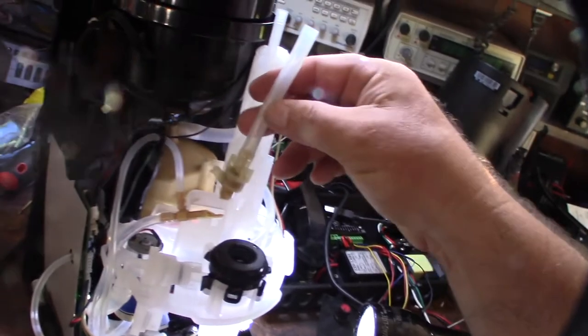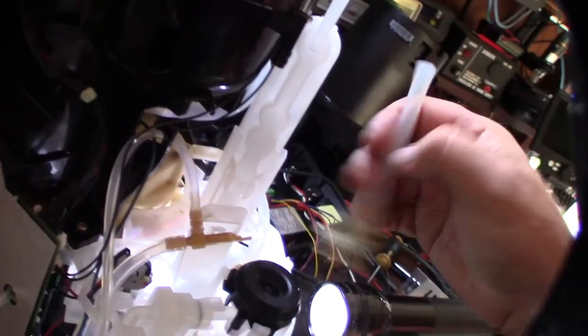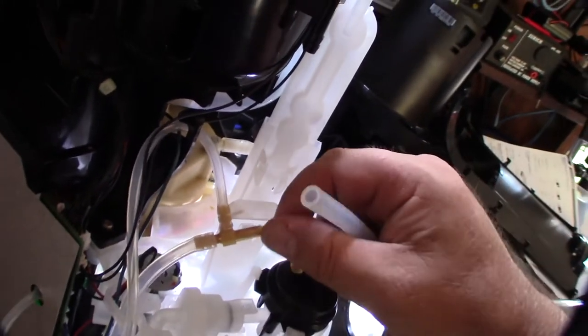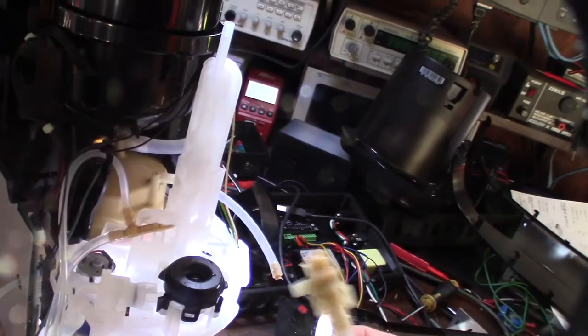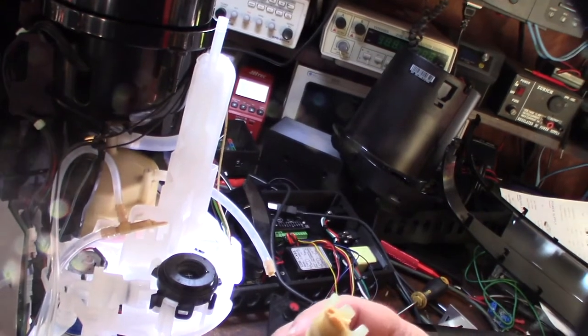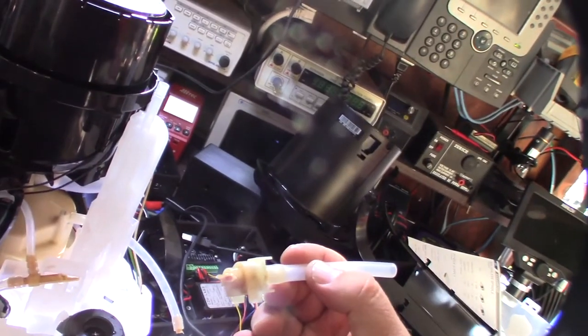Alright. So what is this thing? I mean, to me, it either looks like some sort of filter, right? Or a one-way check valve of some sort. But the plastic just totally disintegrated right here. So I'm going to go online and see if I can figure out what this is.